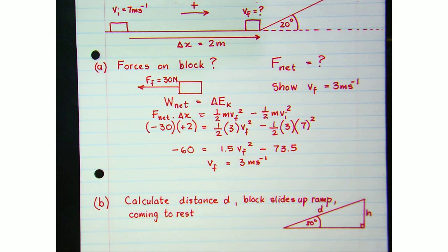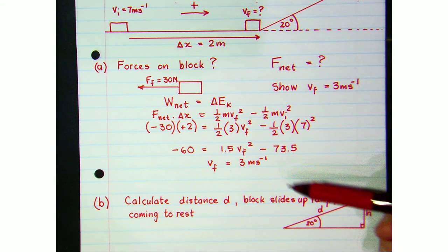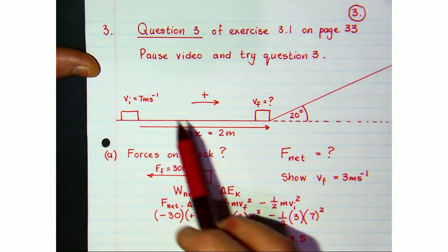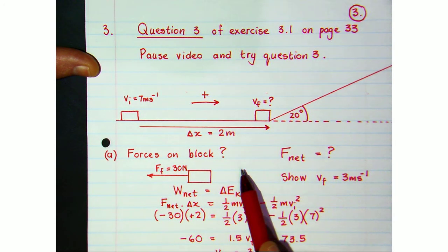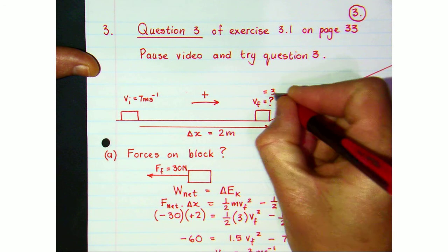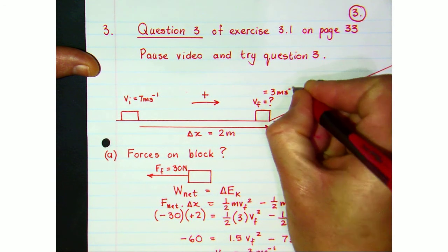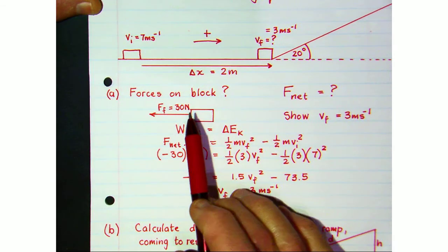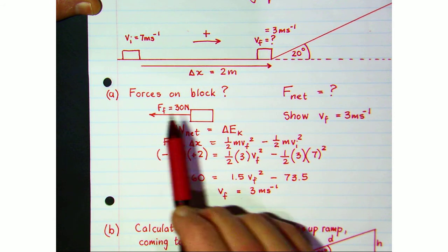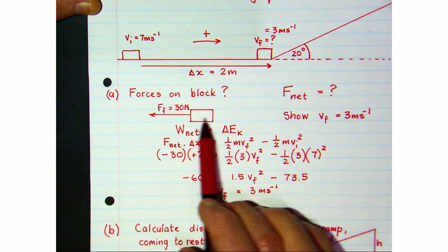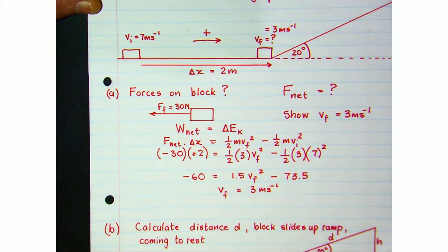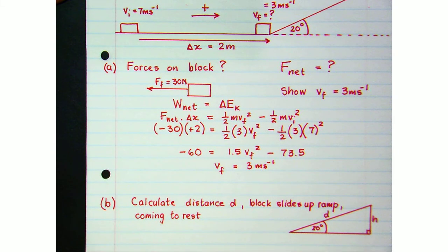We've shown that the final velocity is 3 m/s. The velocity decreases from 7 to 3 m/s because the net force — friction — acts opposite to the motion, causing a leftward acceleration, and the kinetic energy of the object decreases.